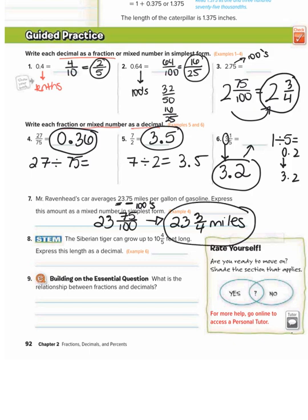Number eight: the Siberian tiger can grow up to 10 and 4 fifths feet long. Express this length as a decimal. 10 is our whole number, so it stays in the ones place. For 4 fifths, we do numerator divided by denominator: 4 divided by 5 is 0.8. So we get 10.8 feet long.